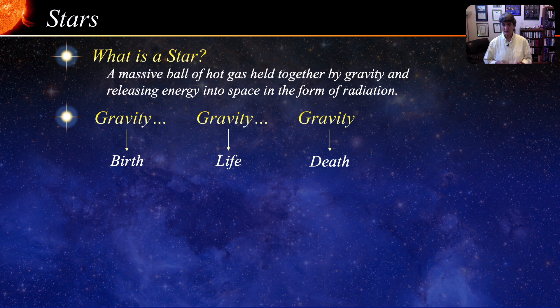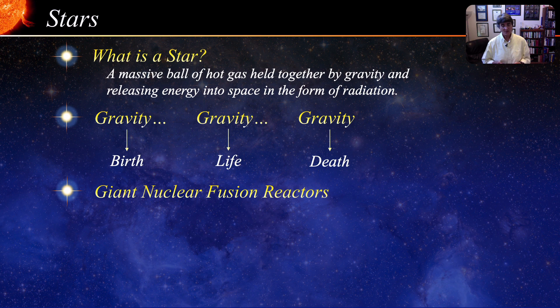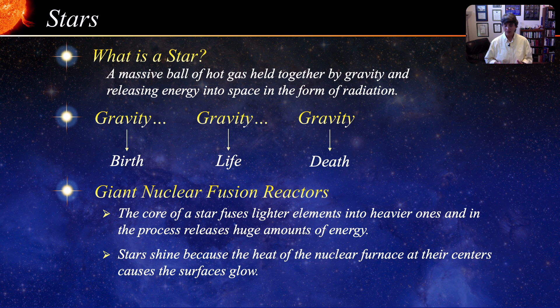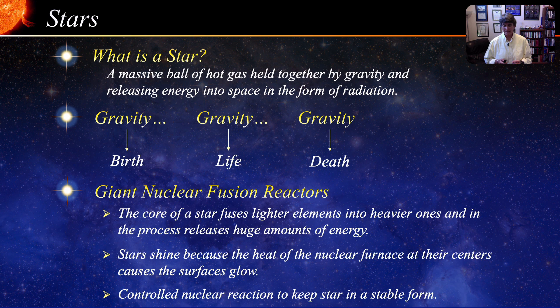A star releases energy into space in the form of radiation, but where does the energy come from? A star is basically a giant nuclear fusion reactor. The core of a star fuses lighter elements into heavier ones, and in the process a large amount of energy is released. Stars shine because their furnaces at their centers make their surfaces very hot and therefore they glow. The nuclear reactions in the core are controlled — non-explosive — occurring at exactly the rate necessary to keep a star in a stable form. The energy released from the core is just sufficient to counteract the gravitational collapse.